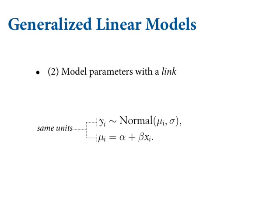Step two in generalized linear models: there's this thing called a link. Consider the Gaussian linear regression — you're familiar with it now, you see it in your dreams. Linear regression is super benign, and that's the reason I started the course with it. It has a very special property which no other generalized linear model has: the scientific measurement units on the outcome variable and the mean parameter are the same. For example in the height model, height was measured in centimeters and mu also has units of centimeters. This is not true for any other generalized linear model.